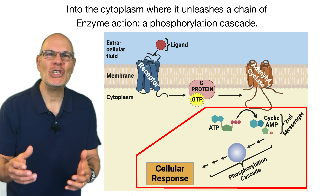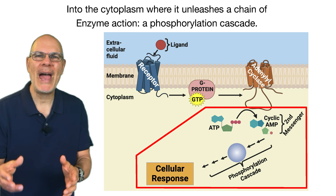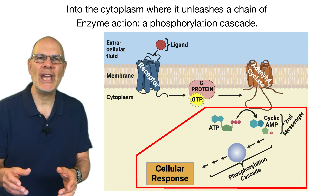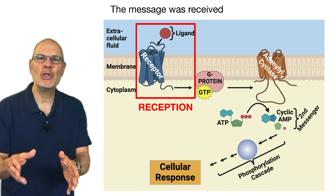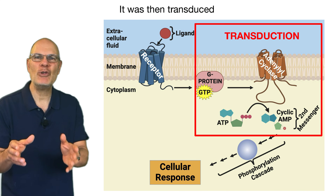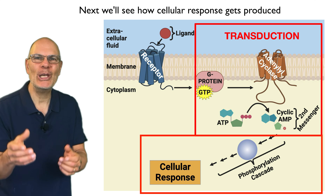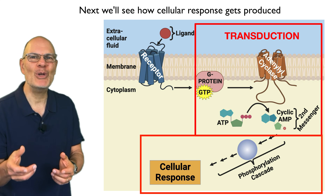Adenylyl cyclase removes two phosphates from ATP, making cyclic AMP — that's the second messenger. It takes a message deep into the cytoplasm where it unleashes a chain of enzyme action: a phosphorylation cascade. The message was received, it was then transduced, and next we'll see how cellular response gets produced.